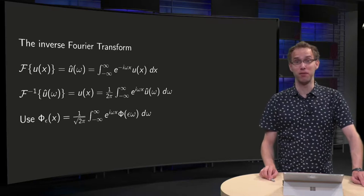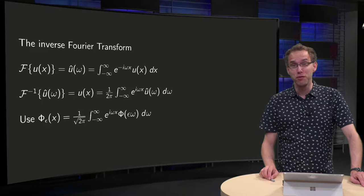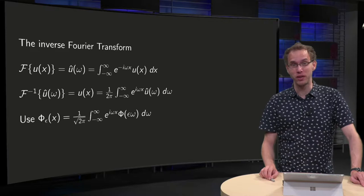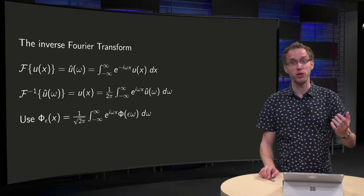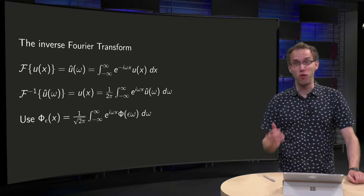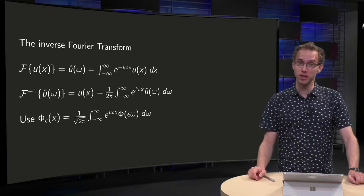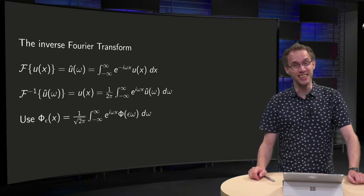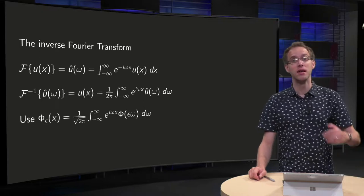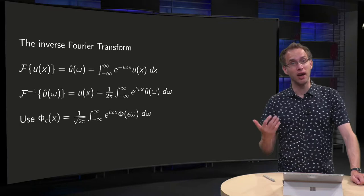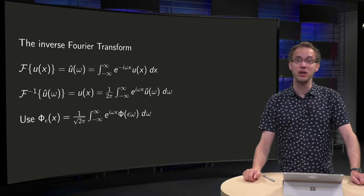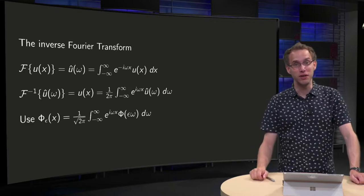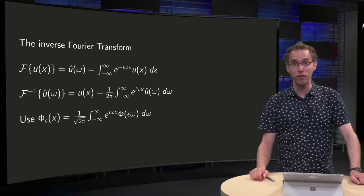You can often simplify a problem by applying a Fourier transform and solving for the Fourier transform of the function instead of the original one. For example, a differential equation is converted into an algebraic equation after a Fourier transform, and this algebraic equation can often be solved much easier. But this yields the Fourier transform of your solution, not the solution itself. So how do you find your original function back? That is what you will learn in this video about the inverse Fourier transform.